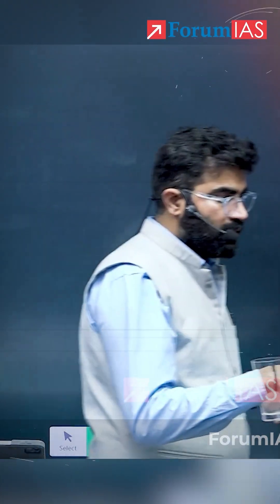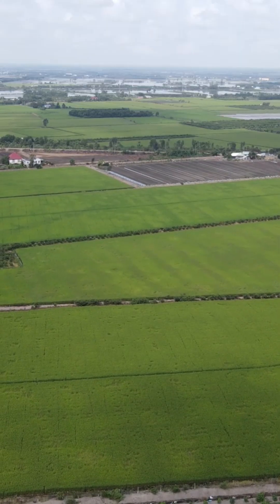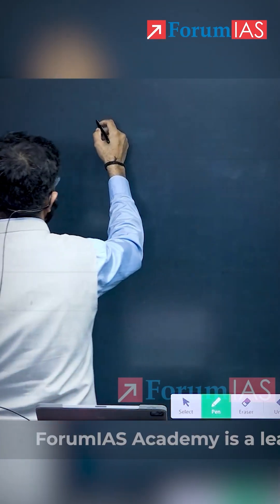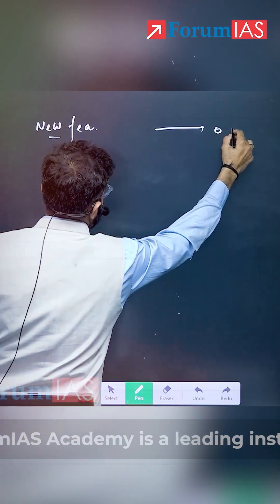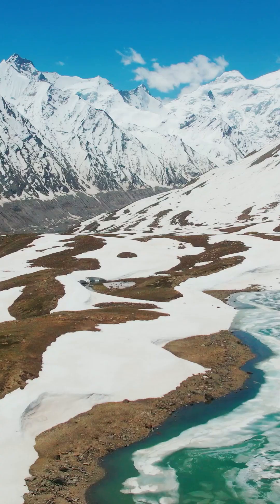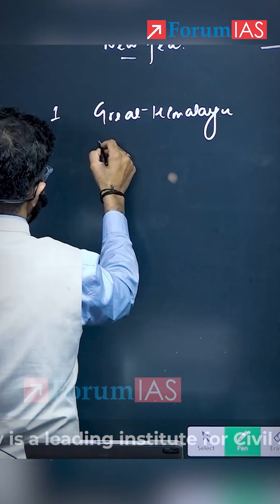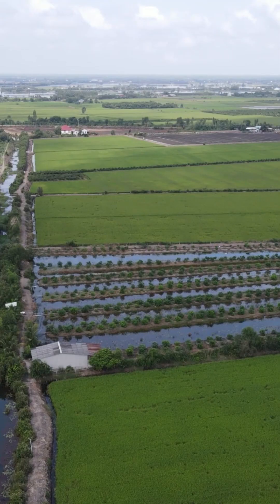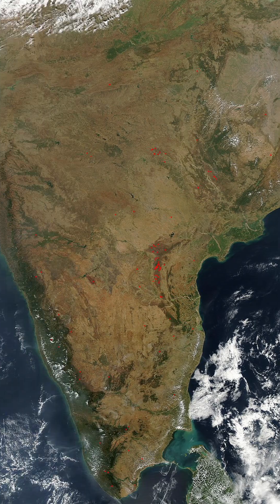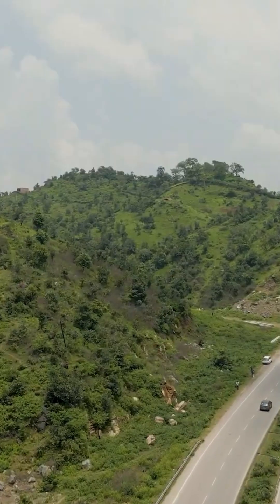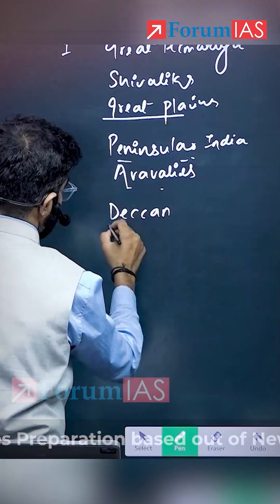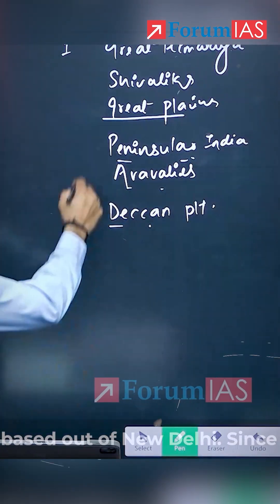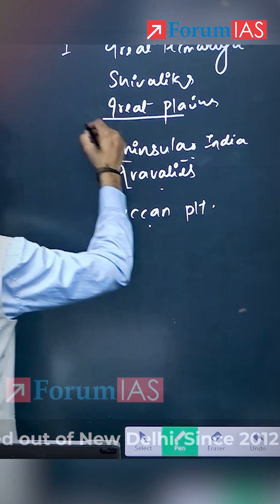Quaternary is the time when landforms like the Great Plains were formed. If I arrange these features from new to old — Great Himalayas, Shivaliks, Great Plains of India, Peninsular India, Aravallis, and Deccan Plateau — tell me: which is the youngest? The Great Plain is the youngest.